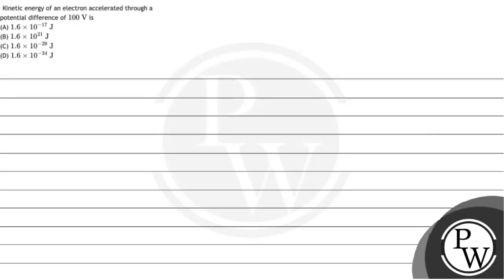Let us answer the question. The question is: kinetic energy of an electron accelerated through a potential difference of 100 volt is?